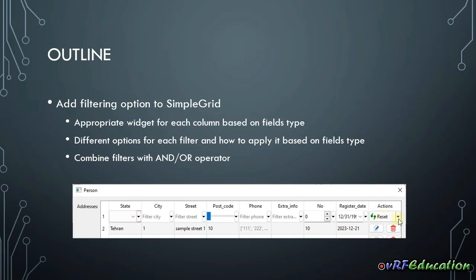Beside it, I also add a down arrow where you can choose how to combine filters together with two operators: AND or OR. You can combine them using AND operator to narrow results, or use OR to widen the range of options. So this is the filtering option for simple grid — let's go to VS Code and check all these items in practice.